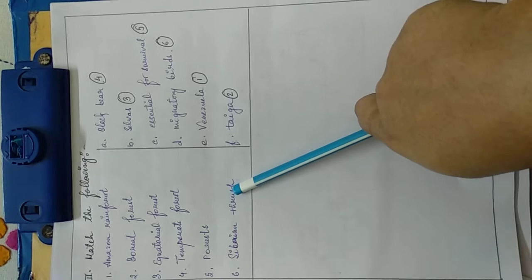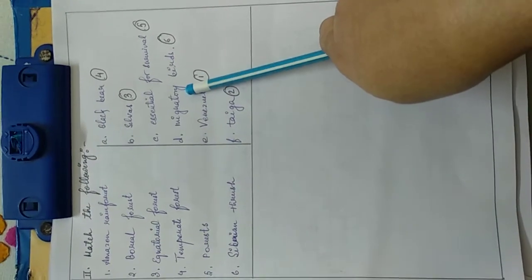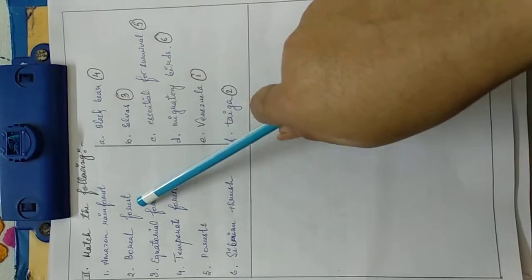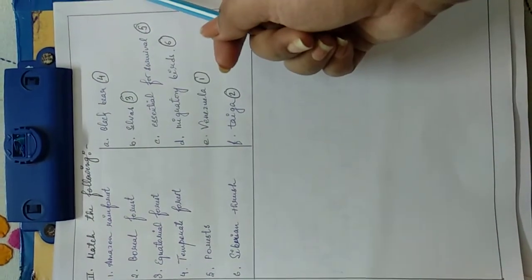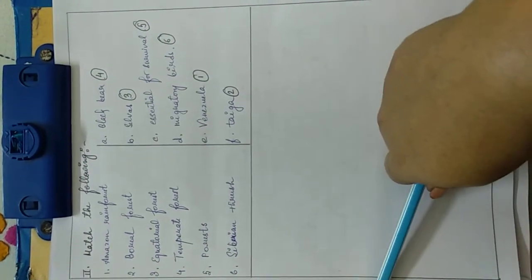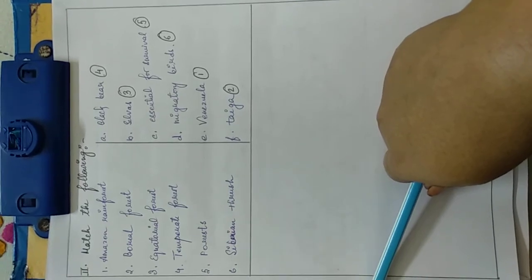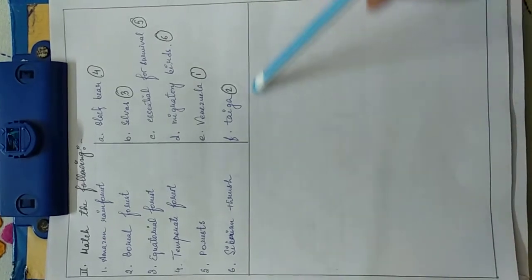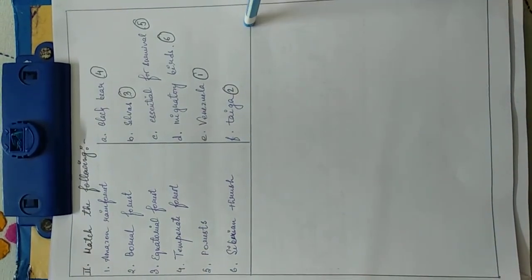So the leftover is Siberian thrush and it goes with migratory birds, as they migrate from the boreal forest to India during the winter season due to the cold weather. So after finishing this you are instructed to again draw an ending line.